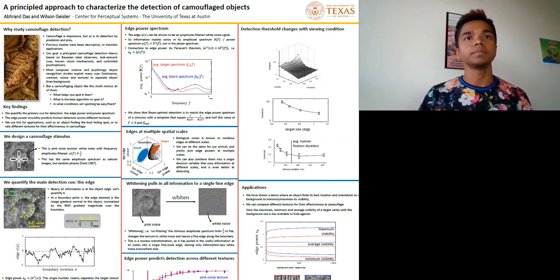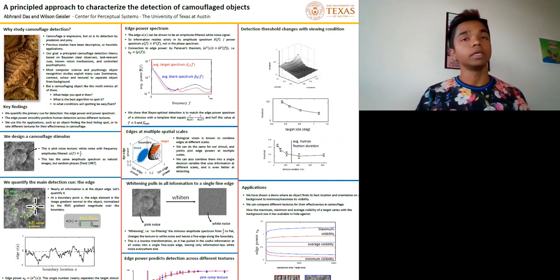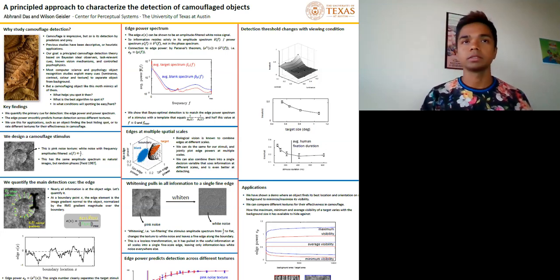At a point on the boundary, we compute the image gradient perpendicular to the object boundary, normalize it, and call it the edge element.